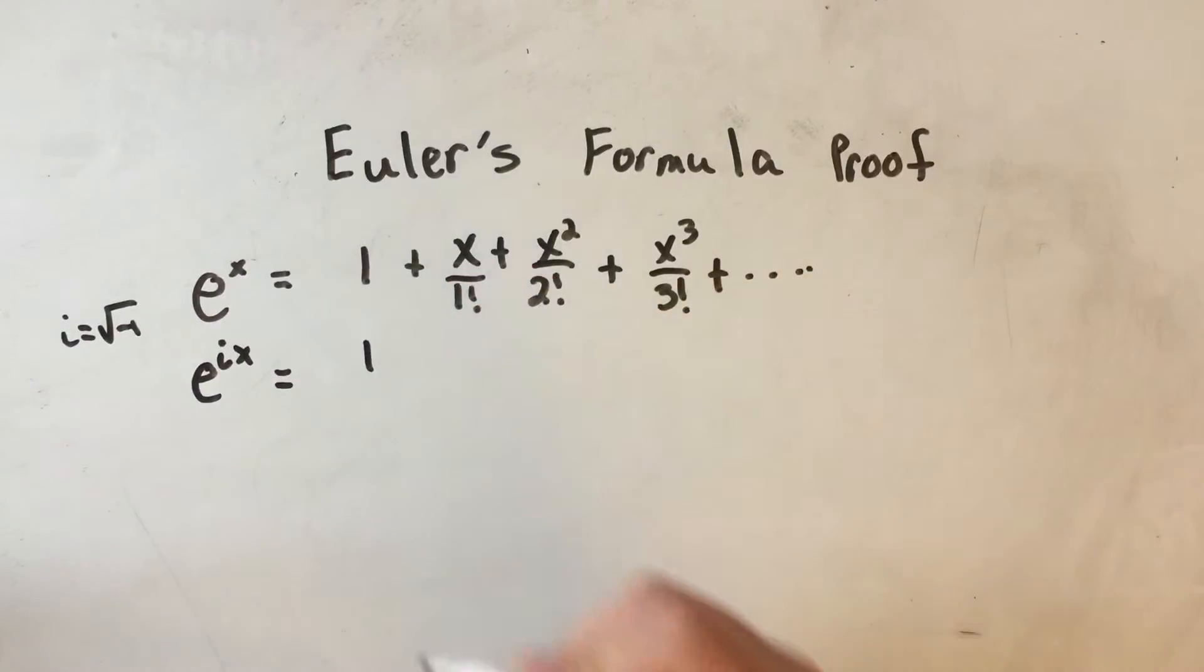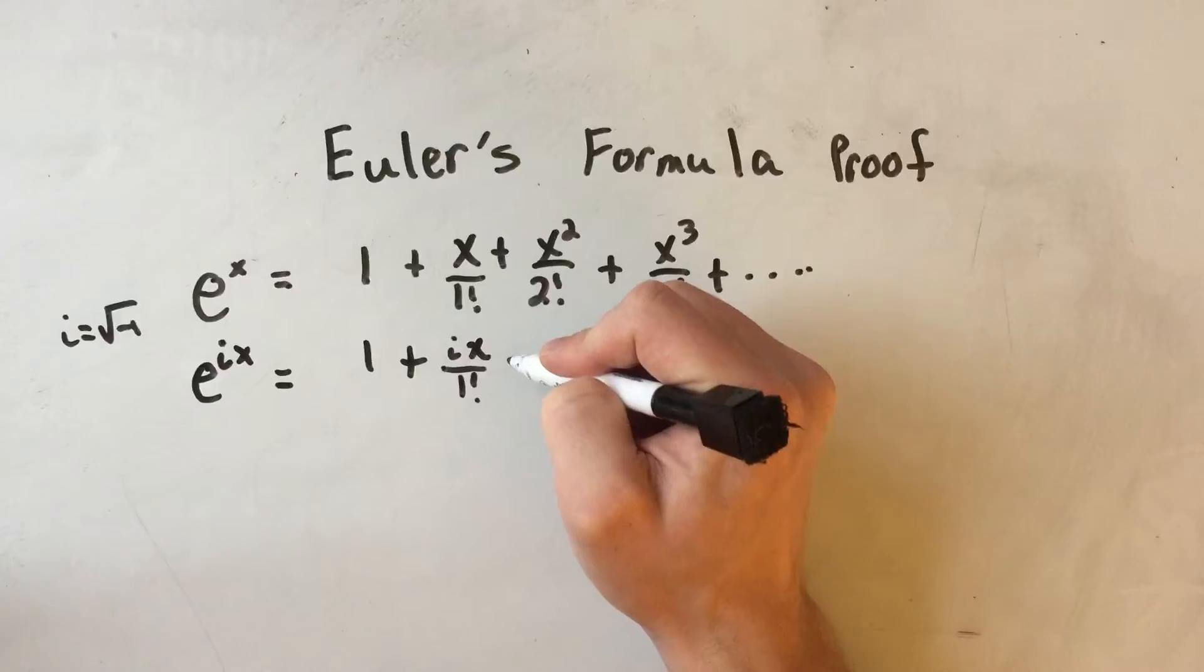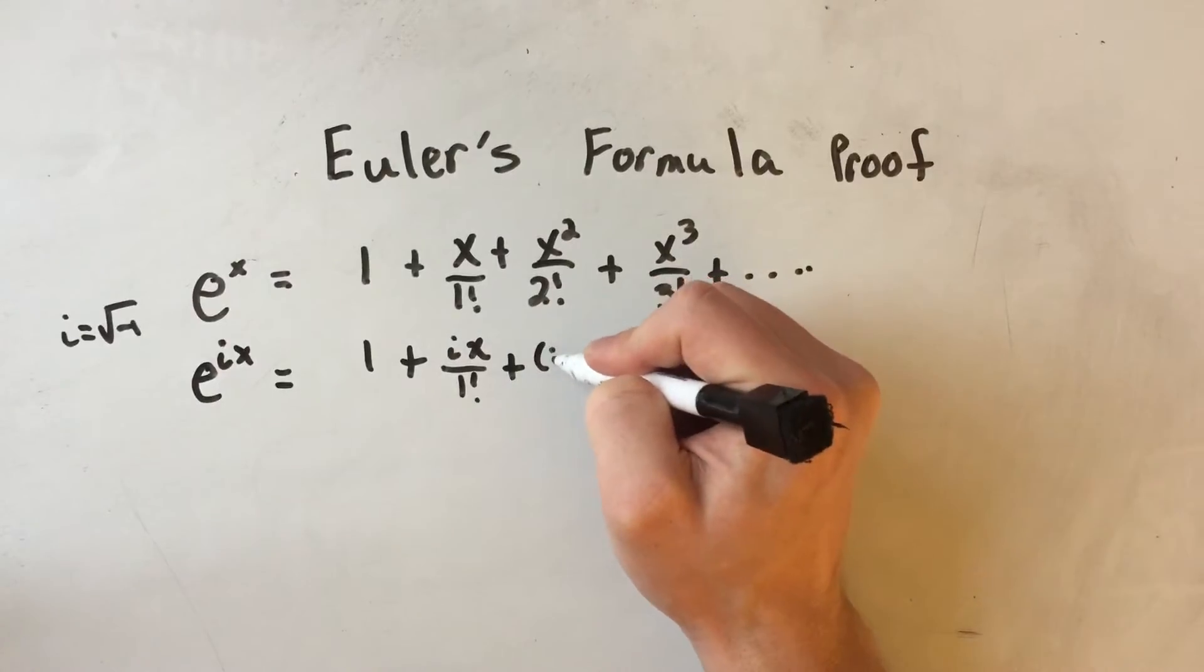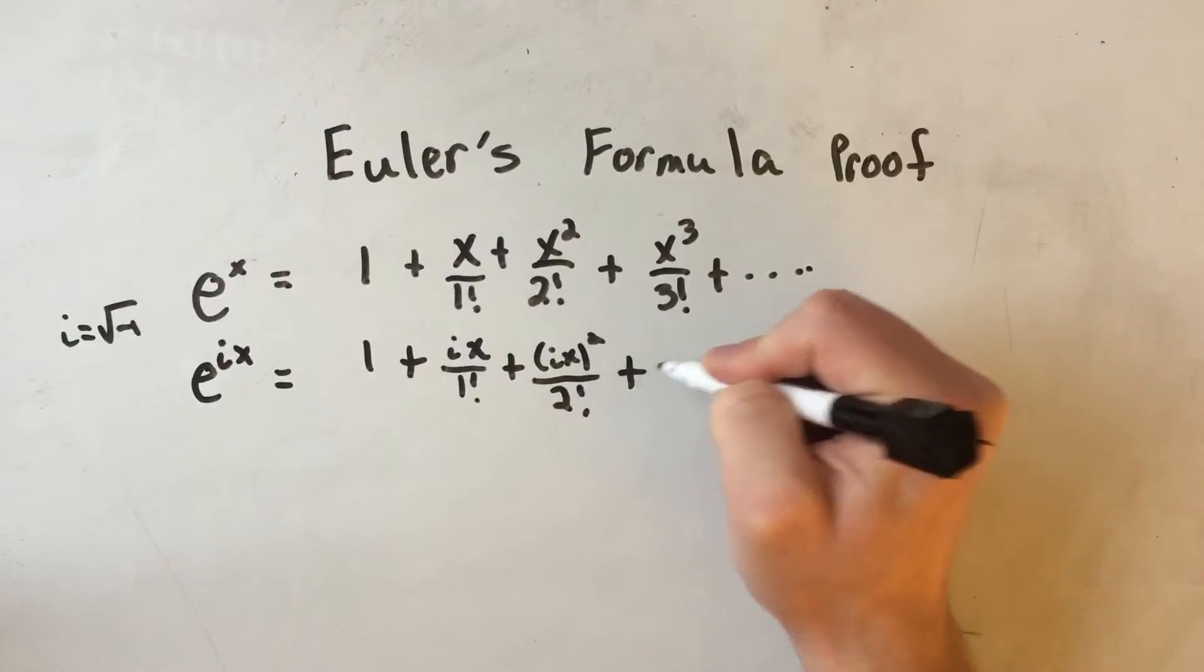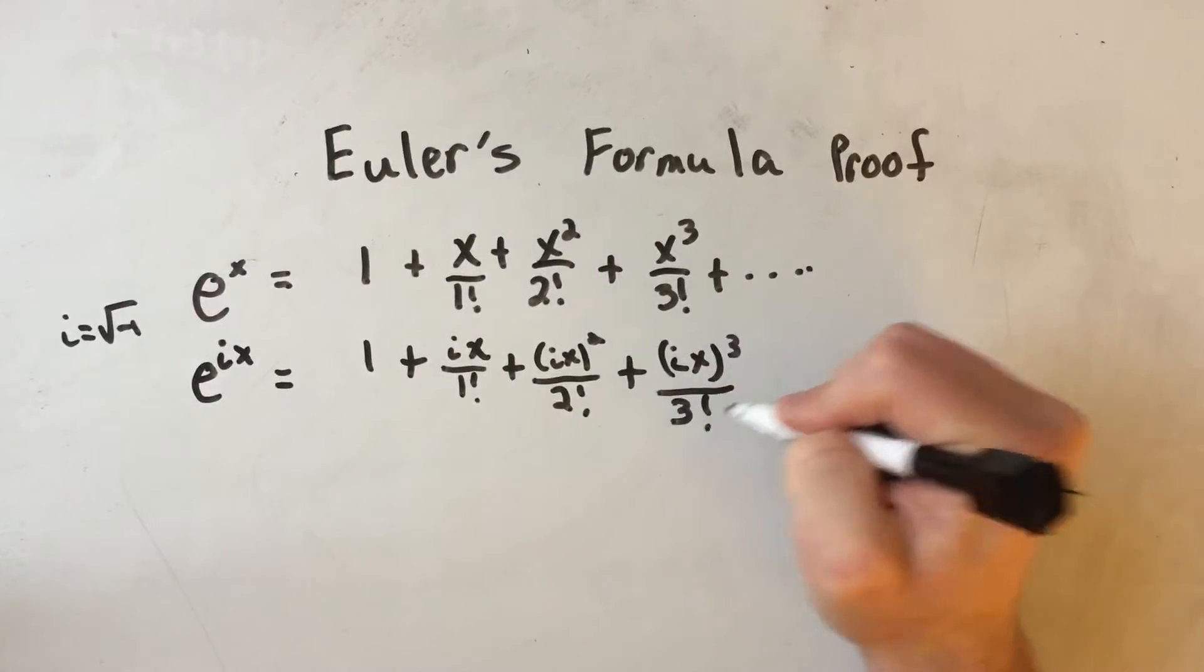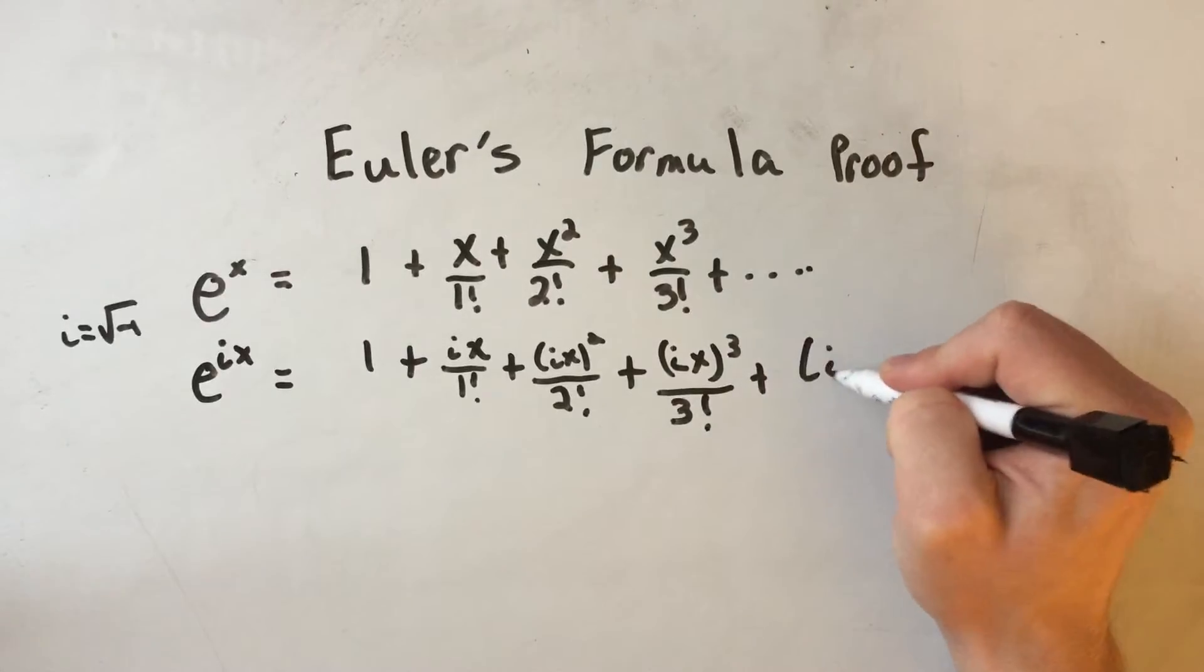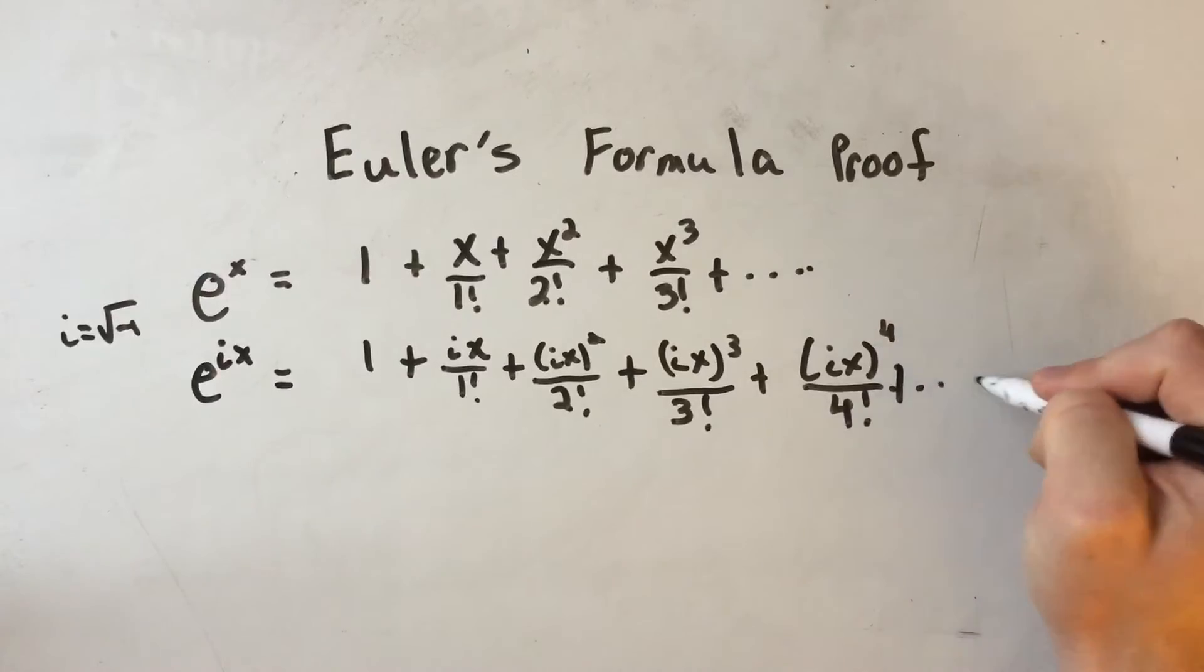Well that 1 would stay the same, but then I would have plus ix over 1 factorial, plus ix squared over 2 factorial, plus ix cubed over 3 factorial, maybe I'll do one more, plus ix to the fourth over 4 factorial, and on forever.